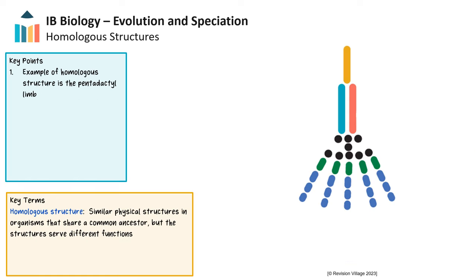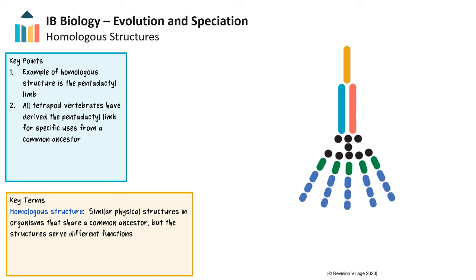Now let's look at some of the evidence for evolution and speciation. Virtually every topic in biology can be better understood through the lens of evolution. Homologous structures are similar physical structures in organisms that share a common ancestor, but the structures serve different functions. These structures are seen throughout living and fossilized species and support the theory that related species speciated from a common ancestor. An example is the pentadactyl limb — the limb of vertebrate species that has five toes or fingers. It is hypothesized that all tetrapod vertebrates, or animals with four legs and backbones, have derived and adapted these limbs for specific uses and environments from one common ancestor.